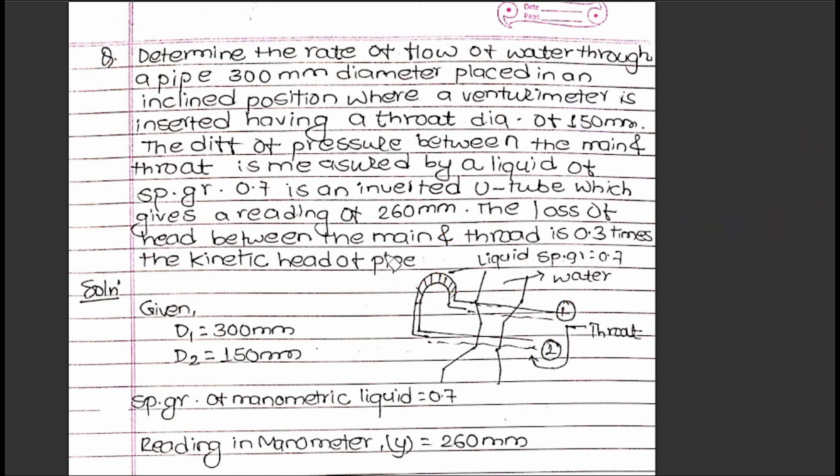The loss of head between the main and throat is 0.3 times the kinetic head of the pipe. This means the head loss h_l = 0.3 × V₁²/2g.